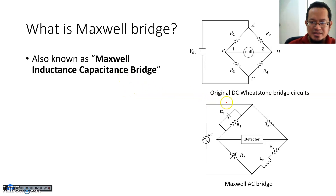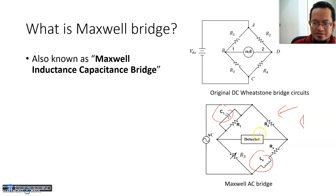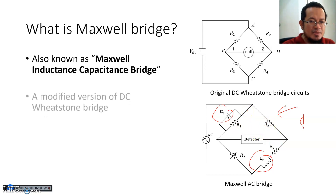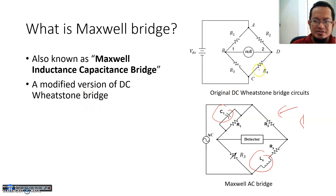As you can see in this circuit, there are not only resistances but also a capacitance and an inductor alongside the resistors. This is basically a modified version of the DC Wheatstone bridge.